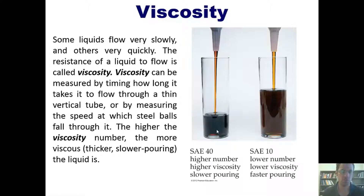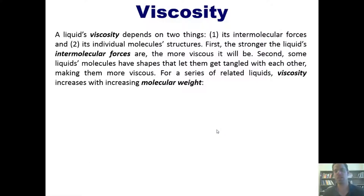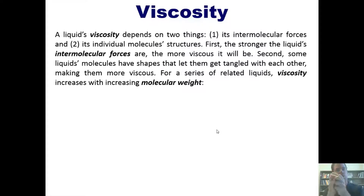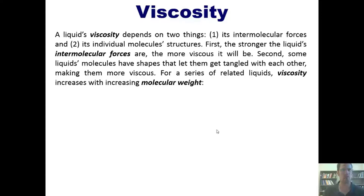A liquid's viscosity depends on two things: first, its intermolecular forces, which we talked about in an earlier lecture, and second, its individual molecule structures. The stronger a liquid's intermolecular forces are, the more viscous it will be, because those individual molecules stick together and are therefore resistant to pouring. Second, some liquids' molecules have shapes that let them get tangled or intertwined with each other, making them more resistant to pouring and therefore also more viscous.